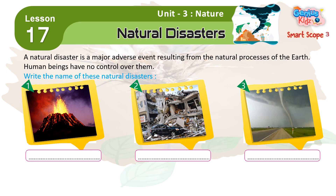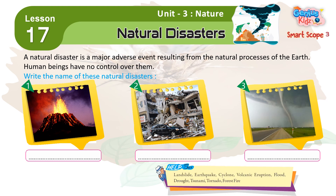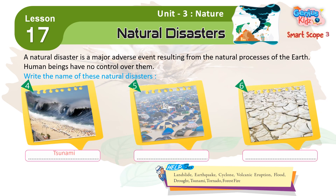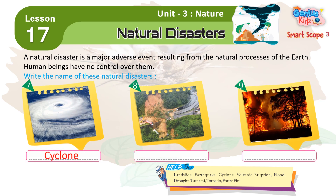Write the name of these natural disasters. Help Box: 1. Volcano Eruption, 2. Earthquake, 3. Tornado, 4. Tsunami, 5. Flood, 6. Drought, 7. Cyclone, 8. Landslide, 9. Forest Fire.